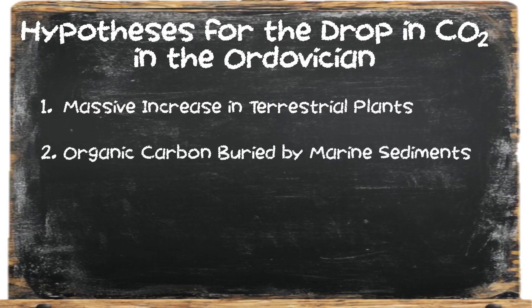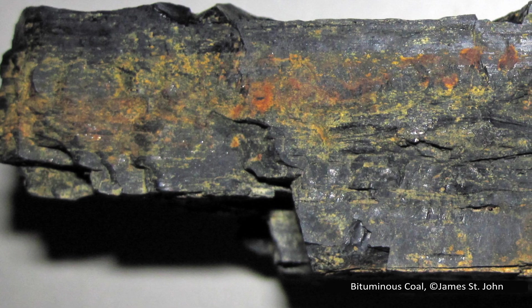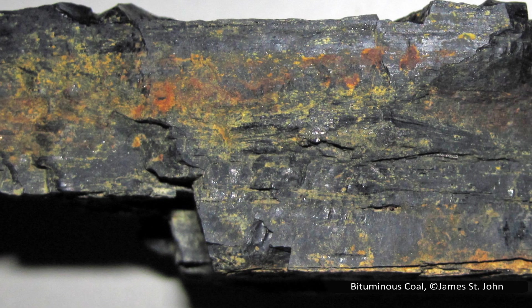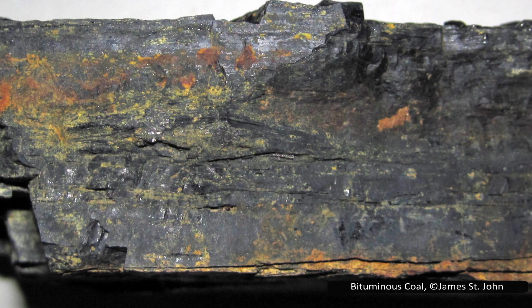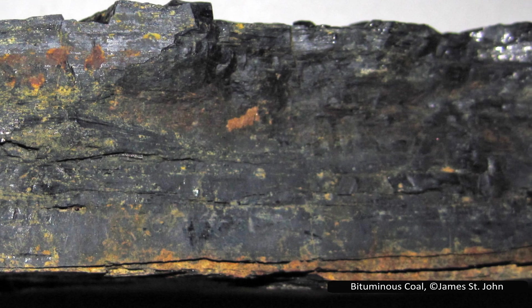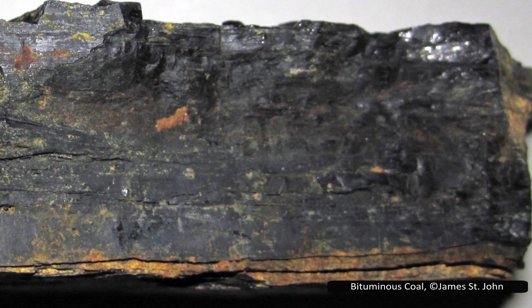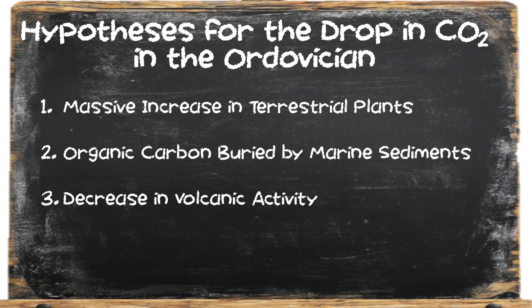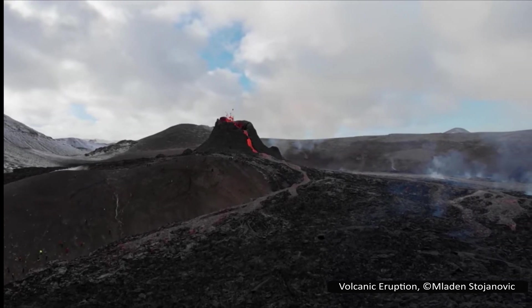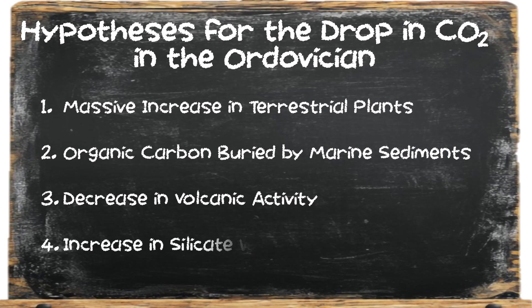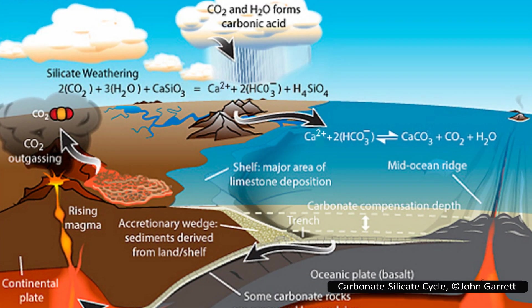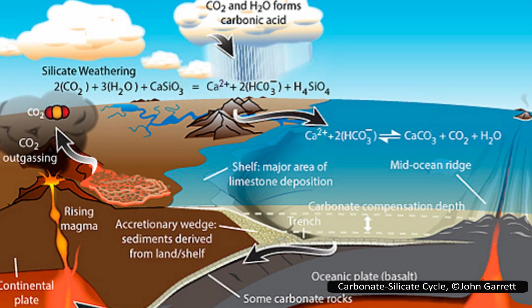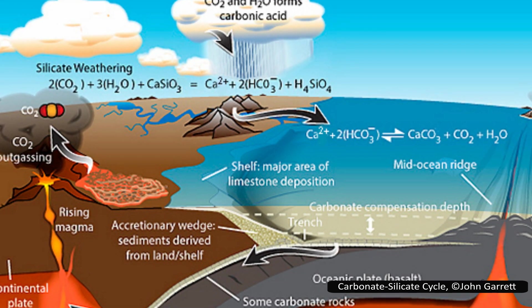The next suggestion is that organic carbon was buried by marine sediments — a process that forms part of the carbon cycle. While the organic carbon is trapped in the Earth, it will not be released as part of the carbon cycle, effectively removing CO2 from the atmosphere. We are reaping the benefits of this process today, as fossil fuels like coal and oil originated as organic carbon buried in sediments over hundreds of millions of years. A decrease in volcanic activity might have lowered CO2 levels, as less volcanic outgassing meant less atmospheric CO2. An increase in silicate weathering — another part of the carbon cycle — could also have this effect. During the weathering process, CO2 is converted into bicarbonate, removing it from the atmosphere and dissolving it in seawater.